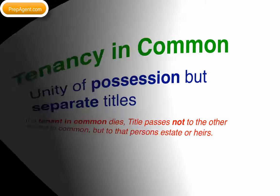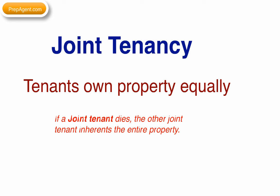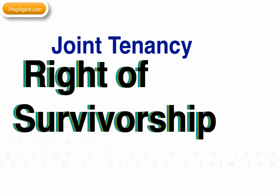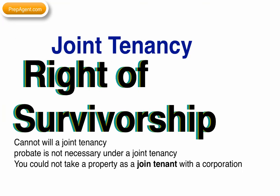Joint tenancy is a form of ownership in which the tenants own property equally. If one dies, the other automatically inherits the entire property — this is known as the right of survivorship. Thus, somebody cannot will a joint tenancy, and probate is not necessary under a joint tenancy. A person cannot take a property as a joint tenancy with a corporation because a corporation cannot die; in that situation, it would be taken as a tenant in common.